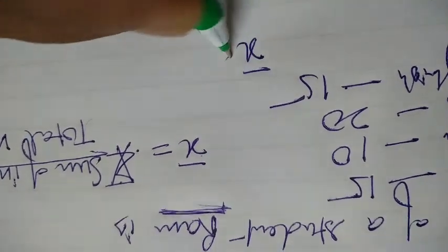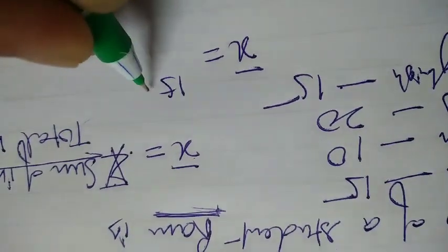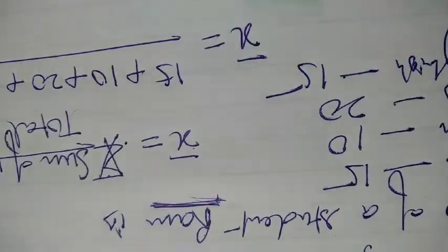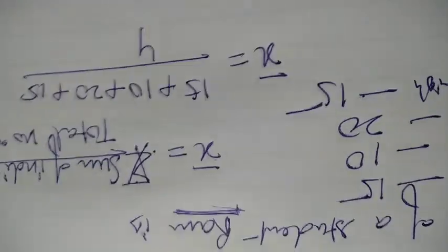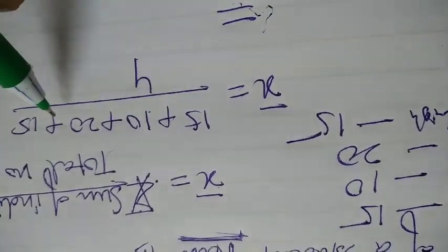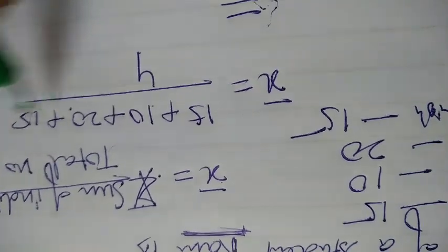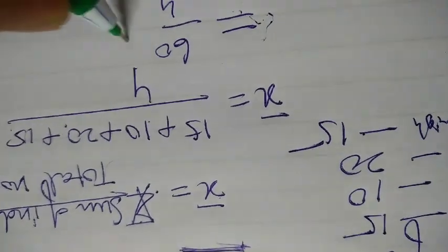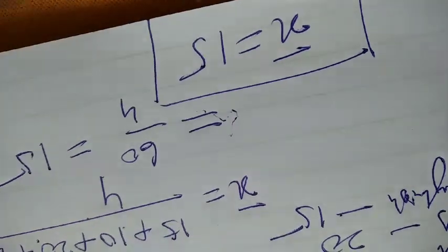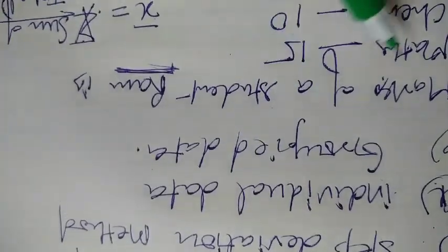So, X bar is here 15 plus 10 plus 20 plus 15. There are 4 subjects, so divided by 4. Here its value becomes 15, 10, 25, 20, 45, 60 divided by 4. It means 15. The Mean of the individual data is 15. Such type of data is said to be the Mean of individual data.